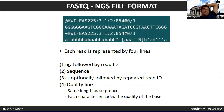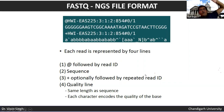NGS file formats are standardized. In the FASTQ format there are four lines per read: the first line is the read ID, the second is the sequence, the third is an optional repeat of the read ID, and the fourth contains the quality score for each nucleotide in the sequence.